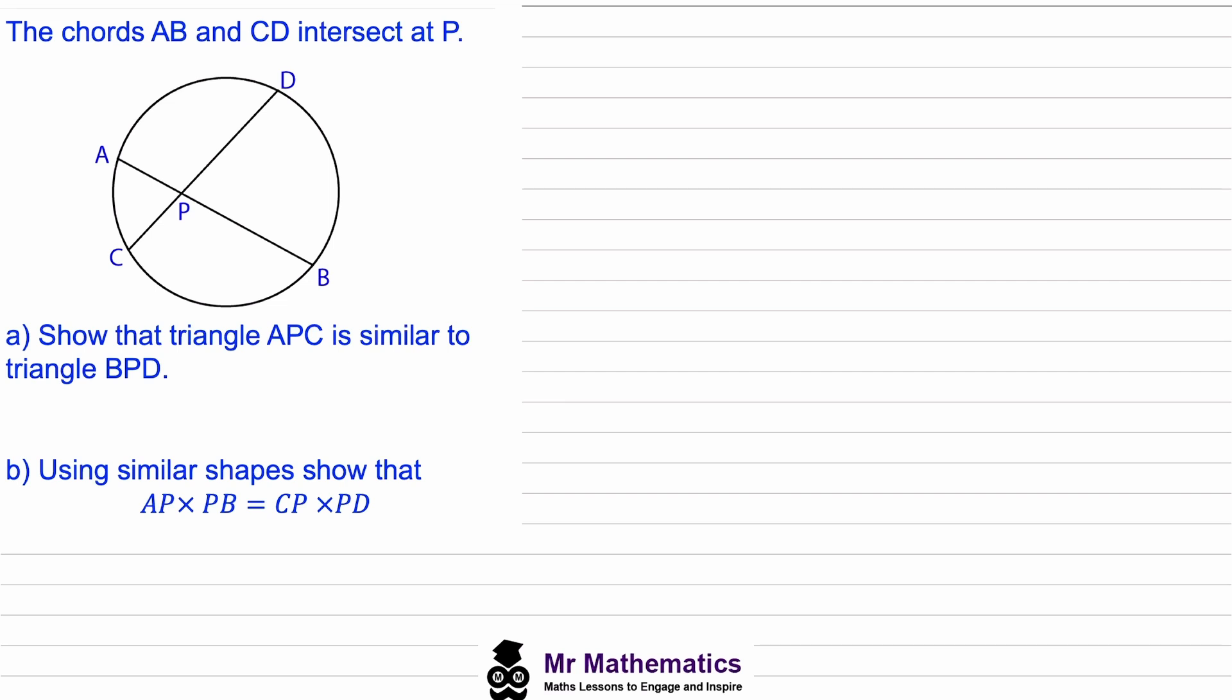So if we begin with this angle at P, we know these two angles will be equal because they are vertically opposite. And then if we construct two chords between A to C and D to B,